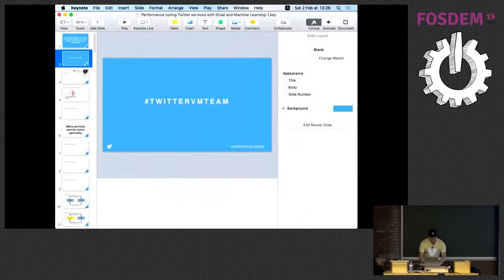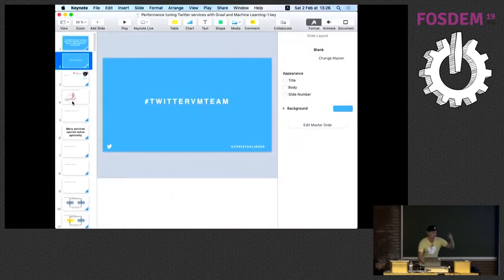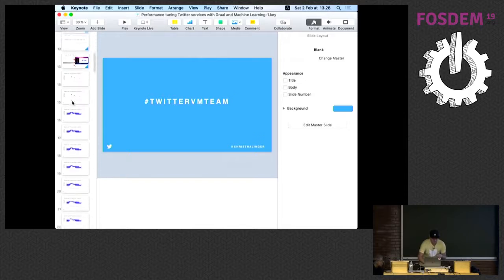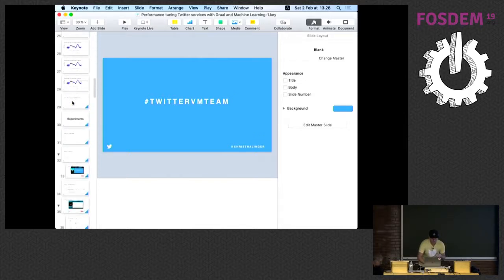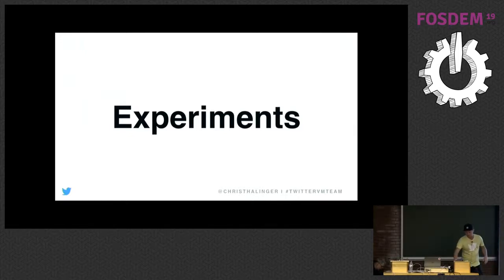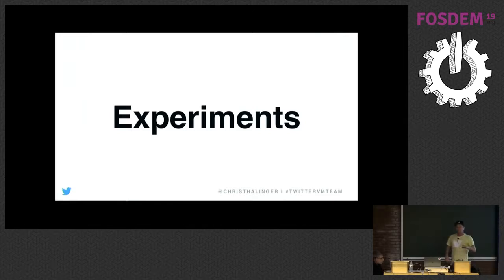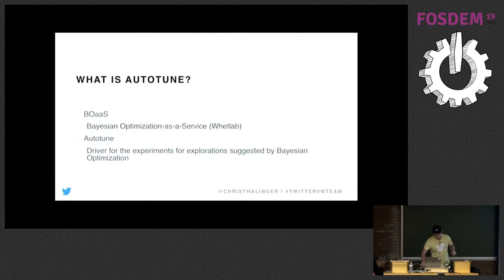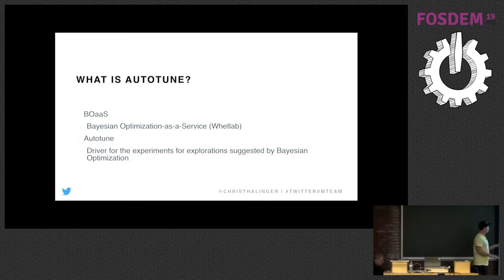I'm going to skip a lot of slides here. You know what Twitter is — we run on microservices and we have a lot of them. This talk is about using Graal to run our mostly Scala-written services, and by using Graal we save a lot of CPU. We also have something called Autotune — it's basically a framework that uses Bayesian optimization as a machine learning framework to tune JVM parameters.